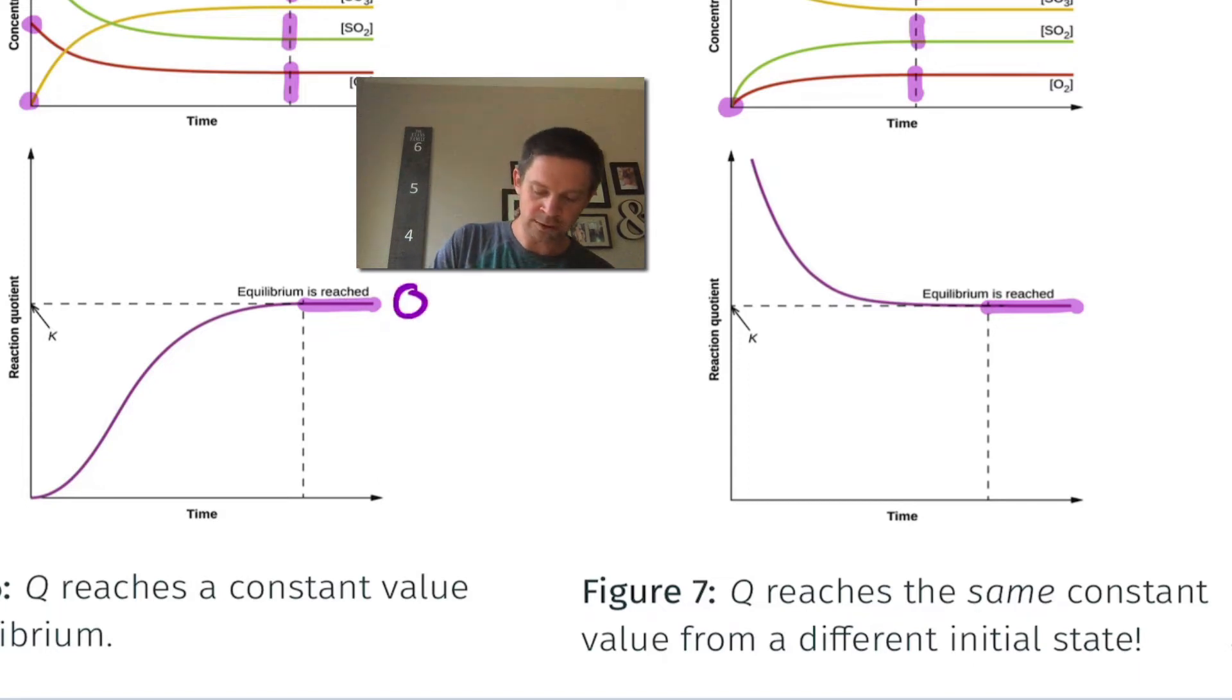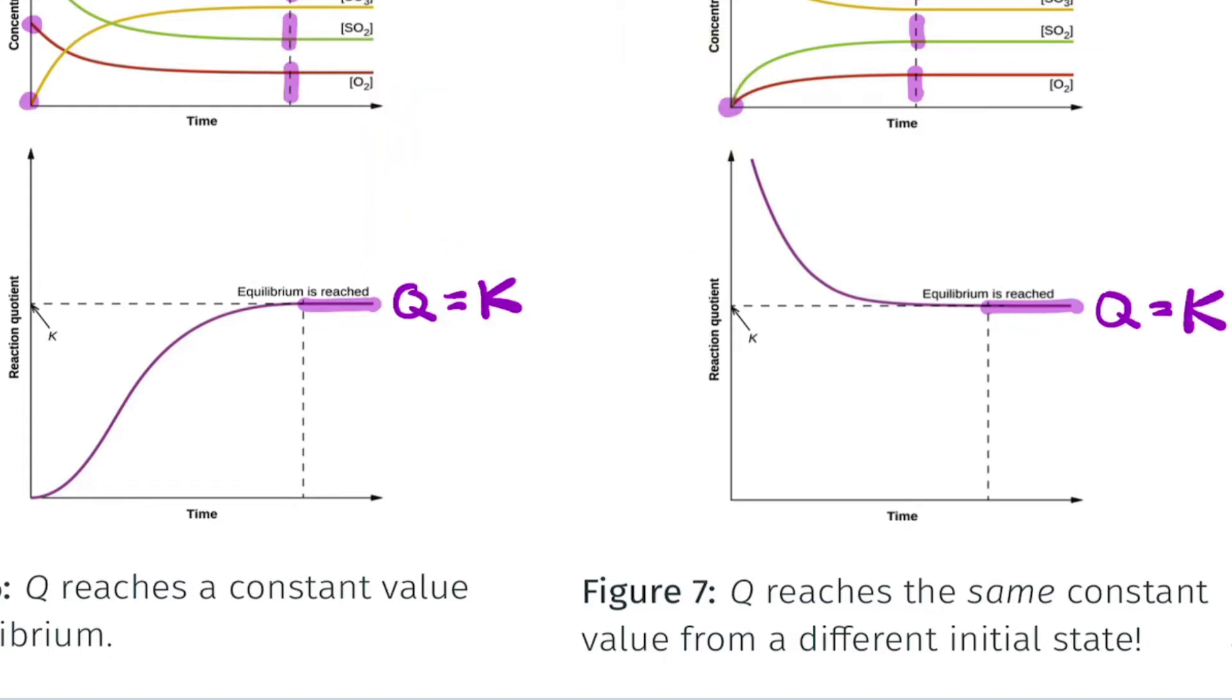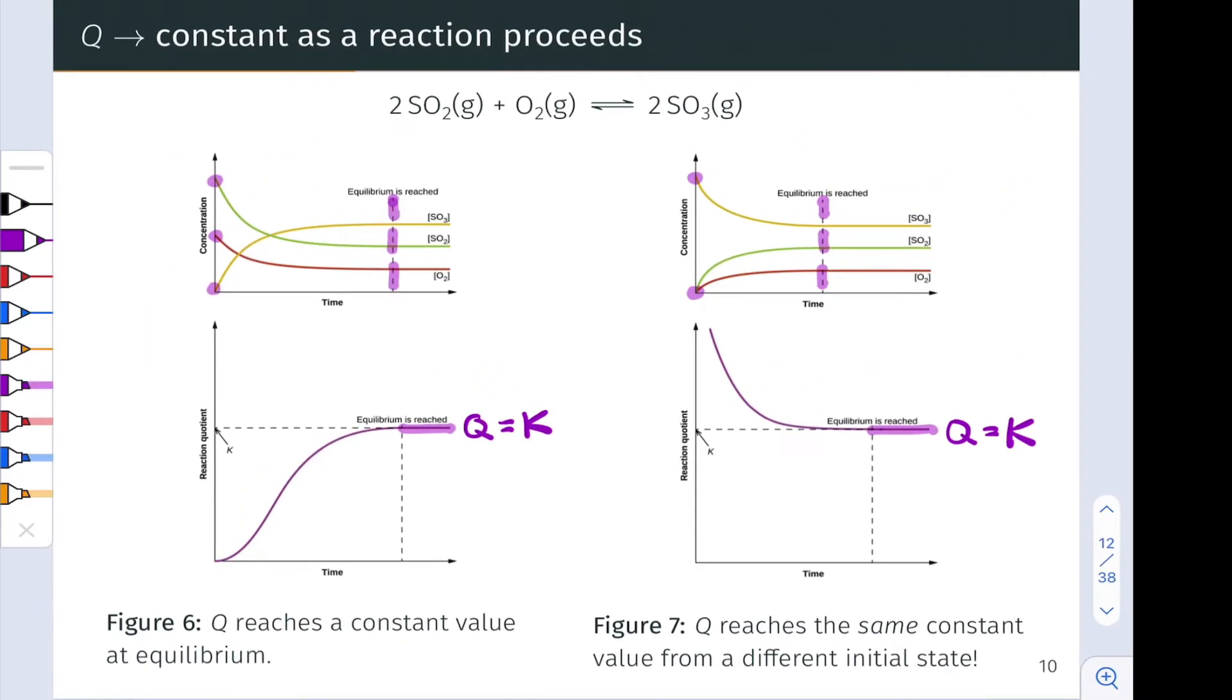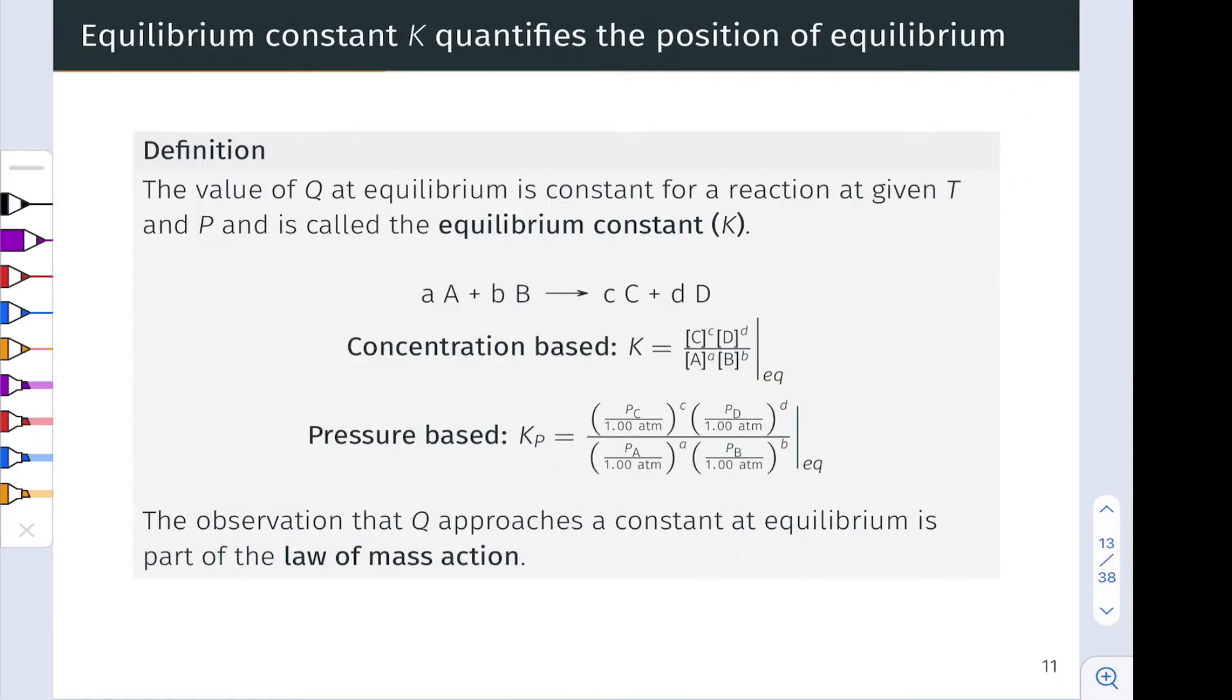That value we call K. And this is what's known as the equilibrium constant. K is defined as the value of Q. You can really think of K as a number in and of itself. The value of Q for the reaction system in equilibrium. The value of Q at equilibrium is constant for a reaction at a given temperature and pressure. And it's what's known as the equilibrium constant and it's denoted with a capital letter K.